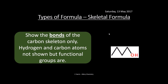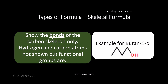Skeletal formula basically shows the bonds of the carbon skeleton only. Hydrogen and carbon atoms are not shown, but the functional groups are. They look like zigzags, and you see these quite often because it's just quicker to draw them. This is butan-1-ol — you can see one, two, three, four carbons here. Each point represents a carbon. This carbon's got three hydrogens attached, the next two, then two, then two, with an OH at the other end. Make sure you can draw these correctly — each point is a carbon.